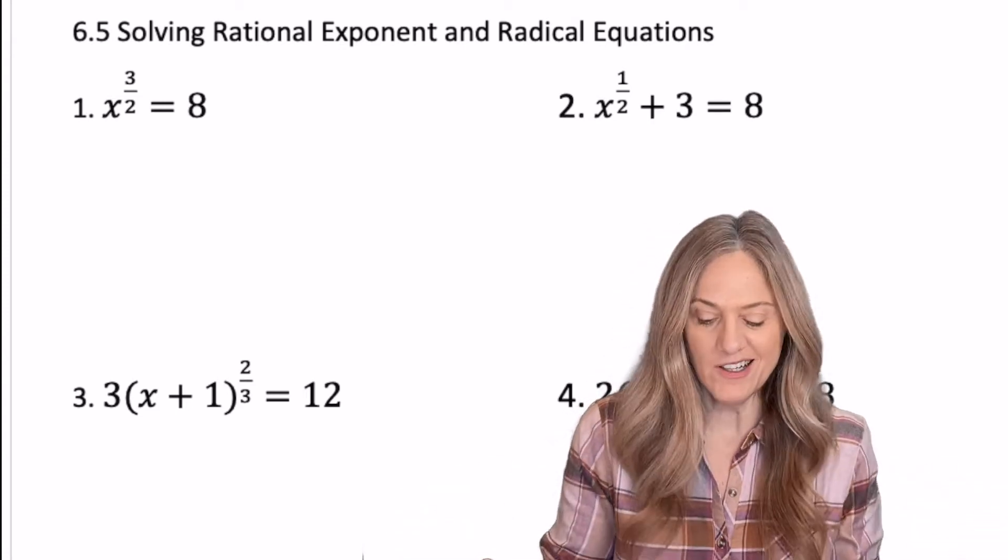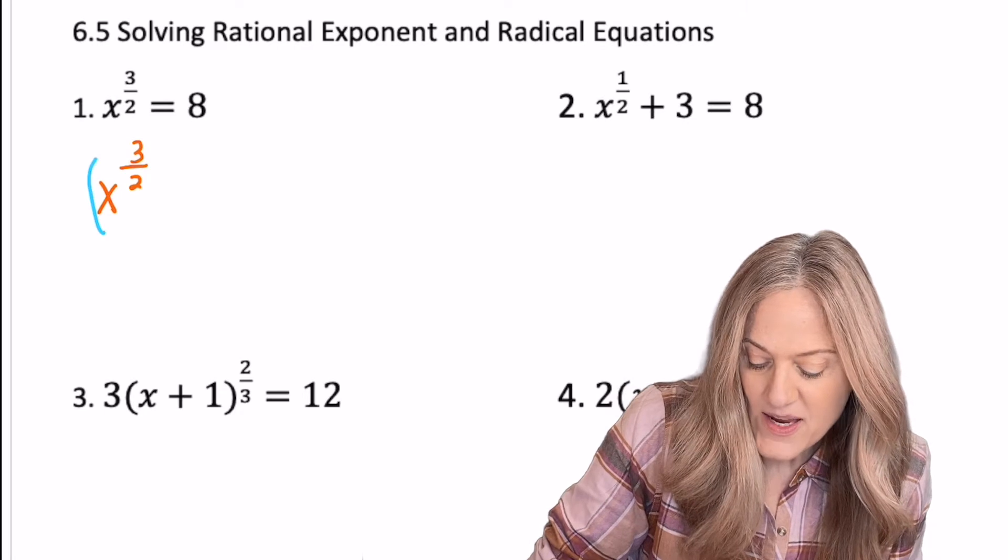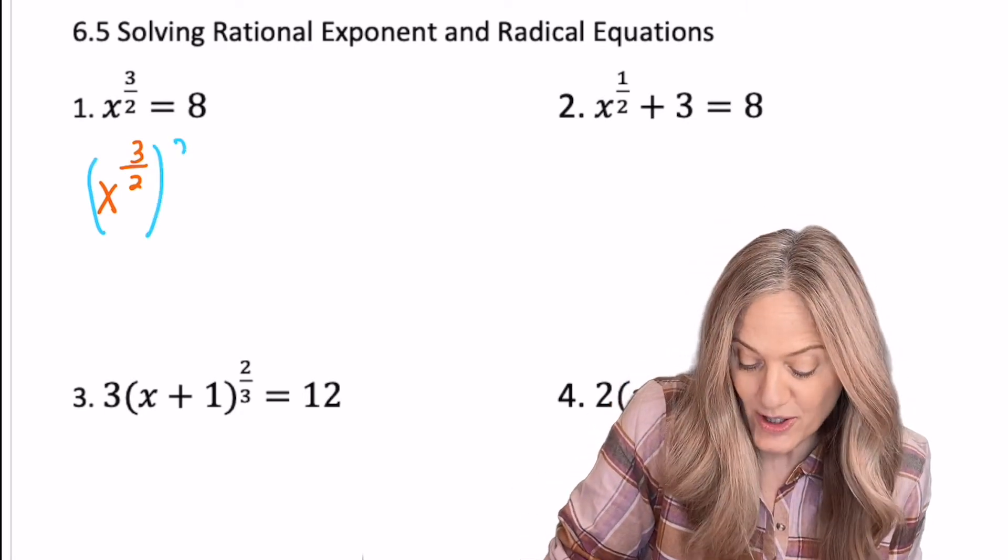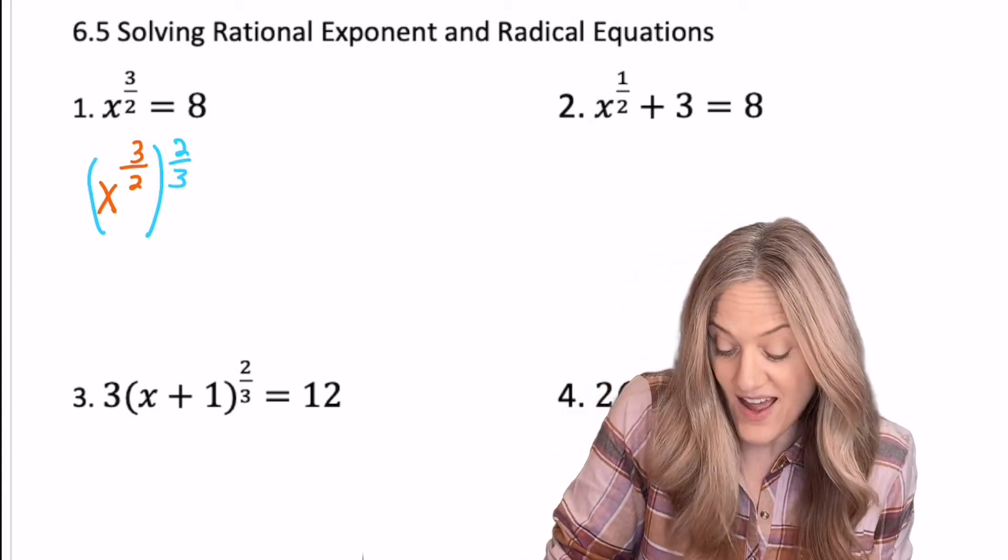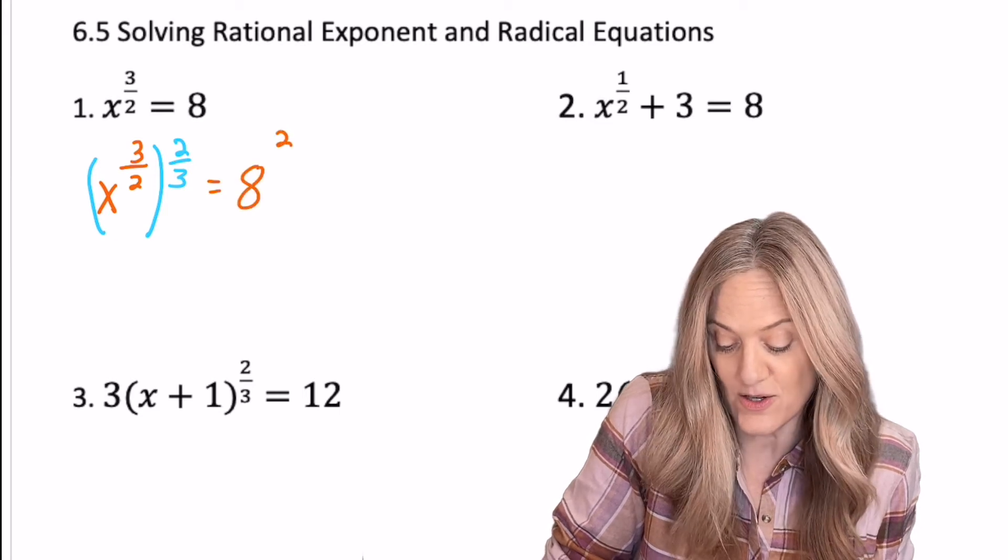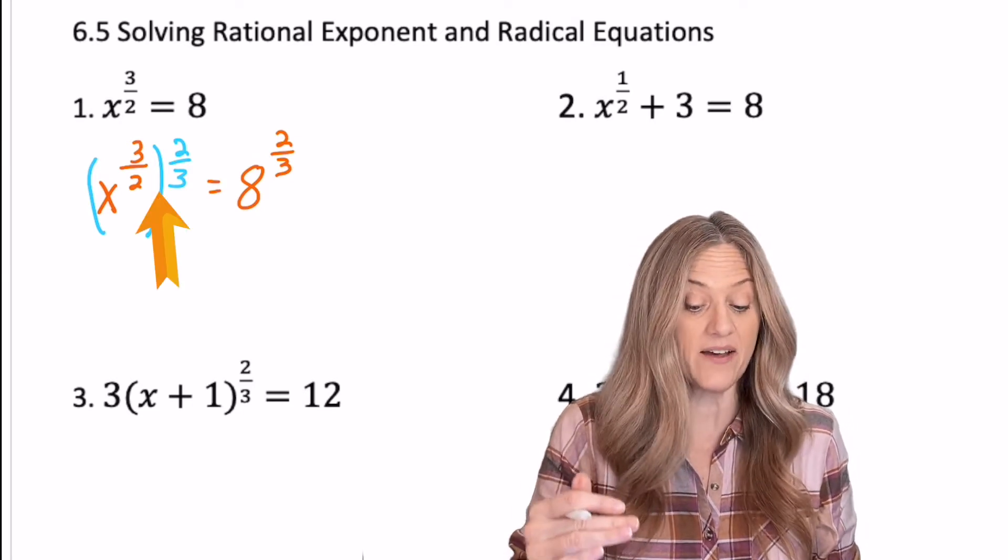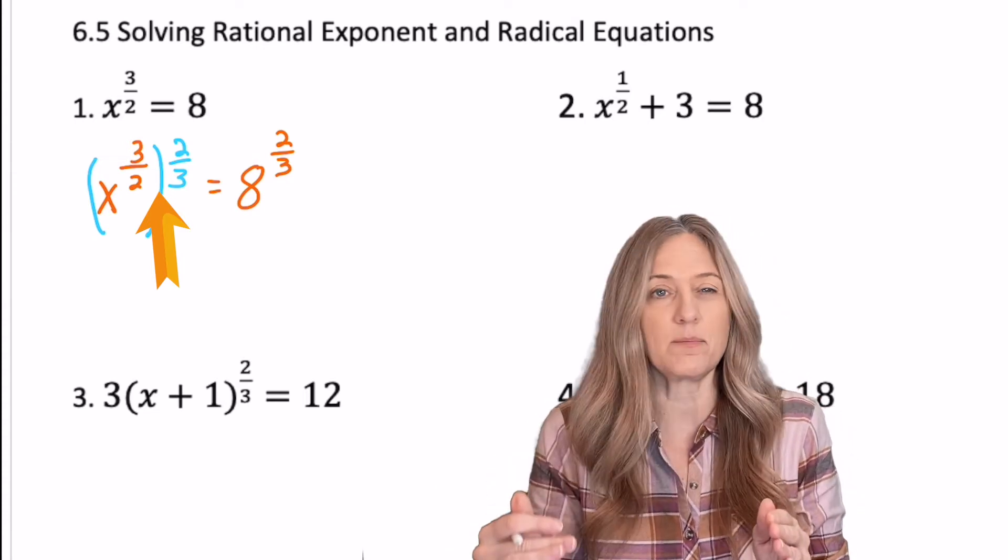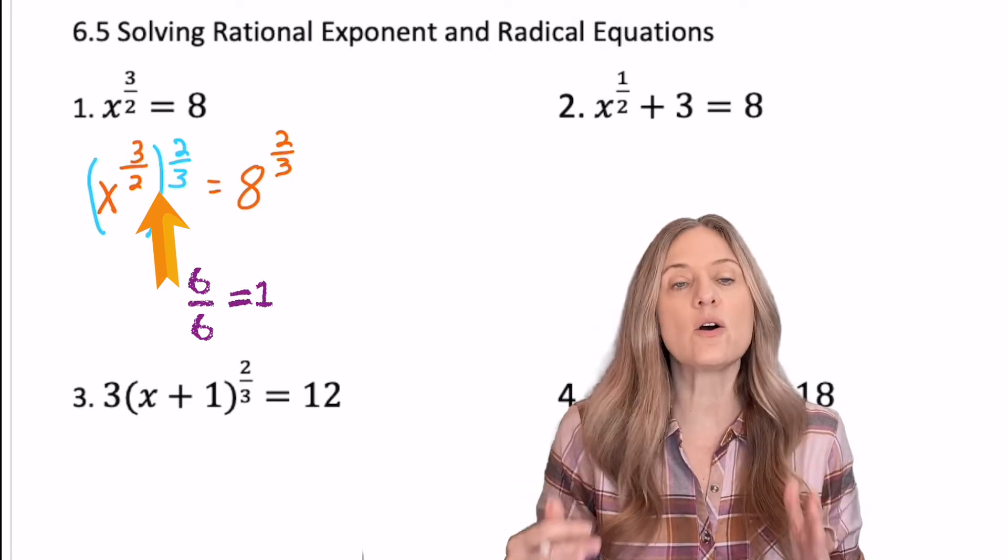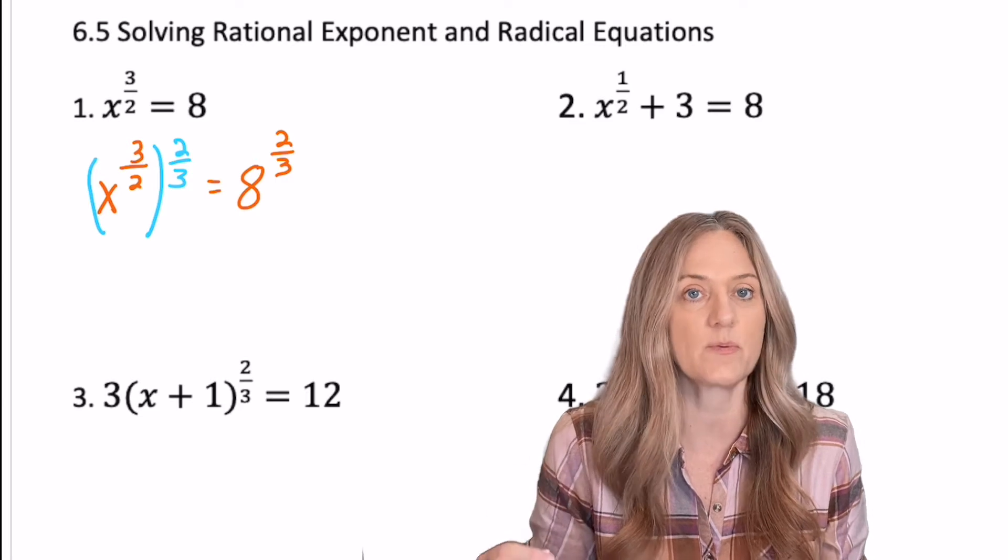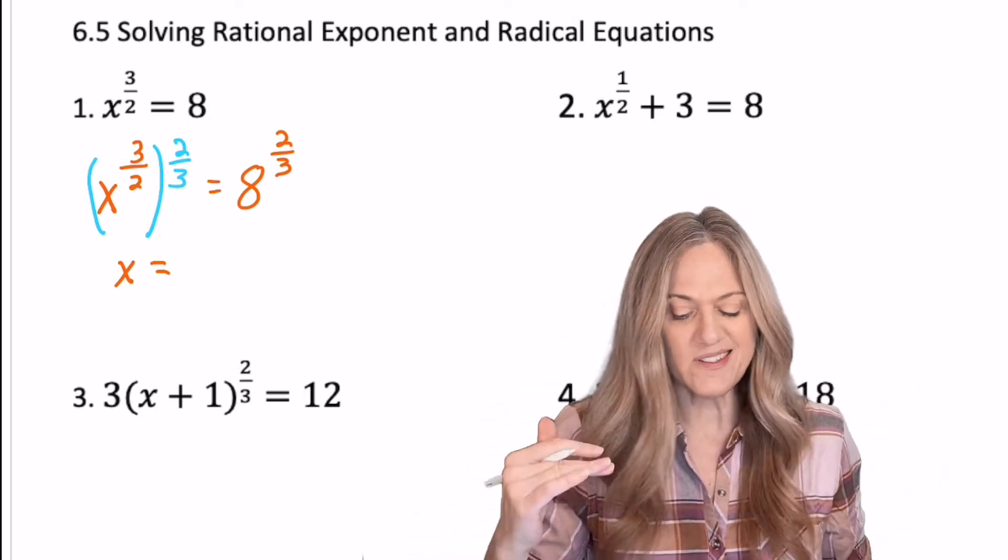Multiply by the reciprocal. So all I need to do is raise it to the reciprocal power. So x to the three halves, I'm going to raise it to the two thirds. And of course, it's an equation. So whatever I do to one side, I have to do to the other. So that means I have to raise eight to the two thirds power as well. Now really think through why this is going to work. x raised to the three halves raised to the two thirds, three halves times two thirds, three times two is six, two times three is six, six divided by six is one. So that's the whole idea. That's how I got rid of my rational exponent. I raised it to the reciprocal. So now I have x to the first power or just x equals eight to the two thirds.